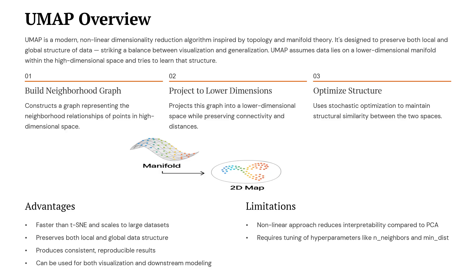UMAP offers several advantages: it is faster than t-SNE and works well with large datasets. It preserves both local and global structure, gives consistent and reproducible results, and can be used not only for visualization but also as a pre-processing step for machine learning models. However, UMAP also has limitations — because it is a non-linear method, its results are sometimes harder to interpret compared to PCA, and it requires tuning of hyperparameters like number of neighbors and minimum distance to get the best results.